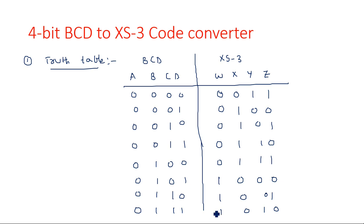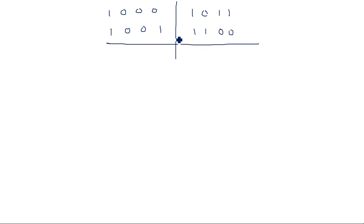In XS3, the value 7 corresponds to 1010, because in 8421 code it reads as 10, but in XS3 it is 7 minus 3. So up to 7, next 8 is 1000 in BCD and 1011 in XS3, and 9 is 1001 in BCD and 1100 in XS3. This completes the truth table between the 8421 BCD code and XS3 code.